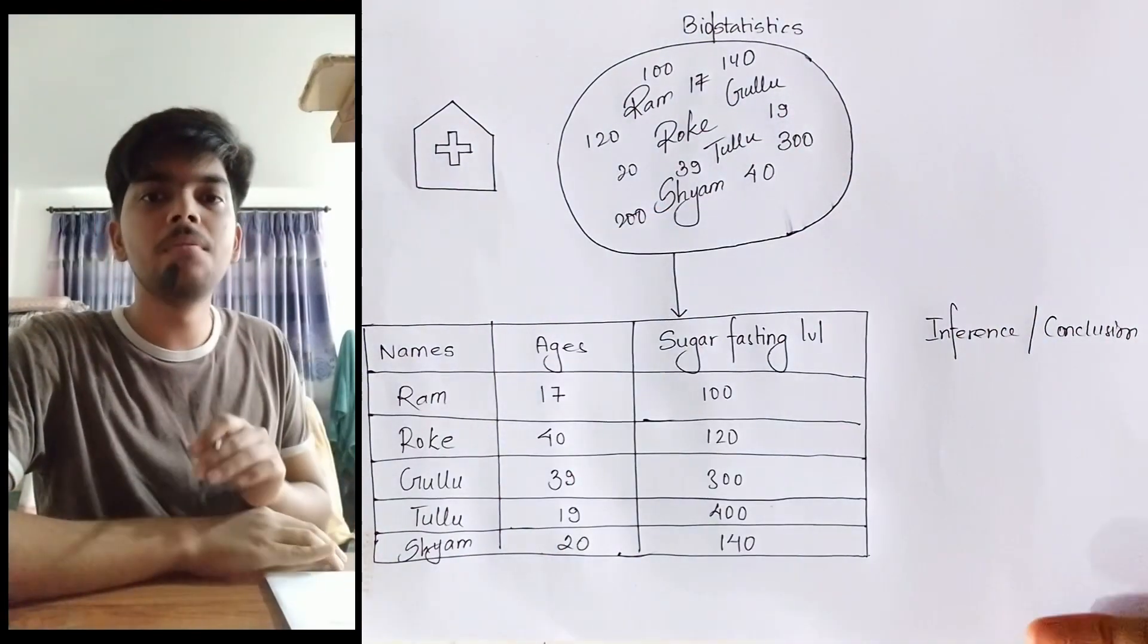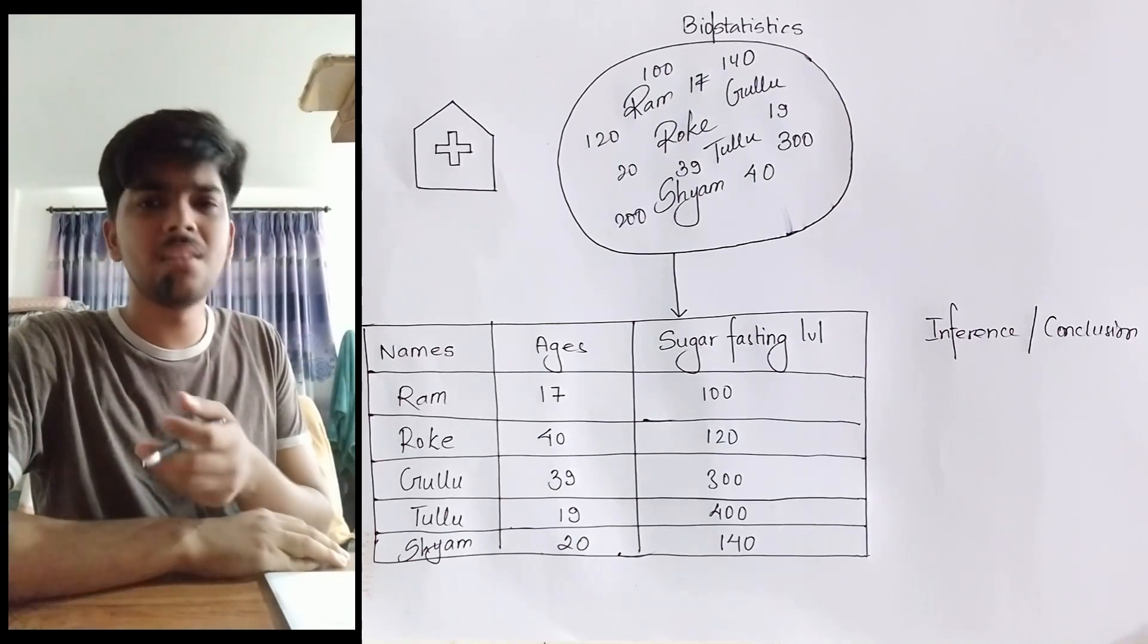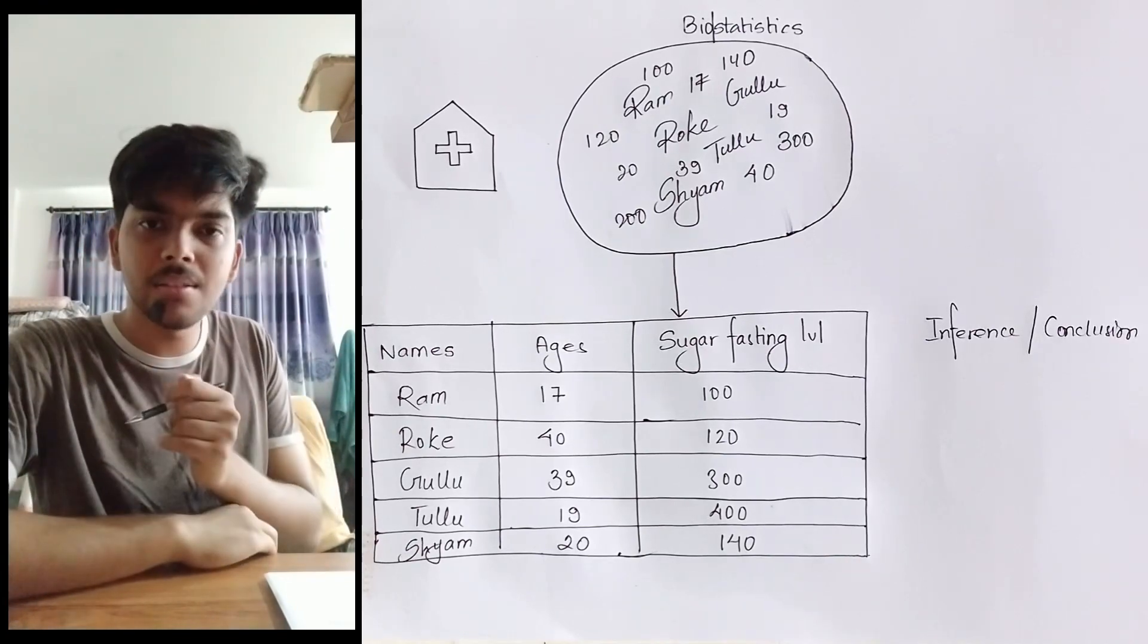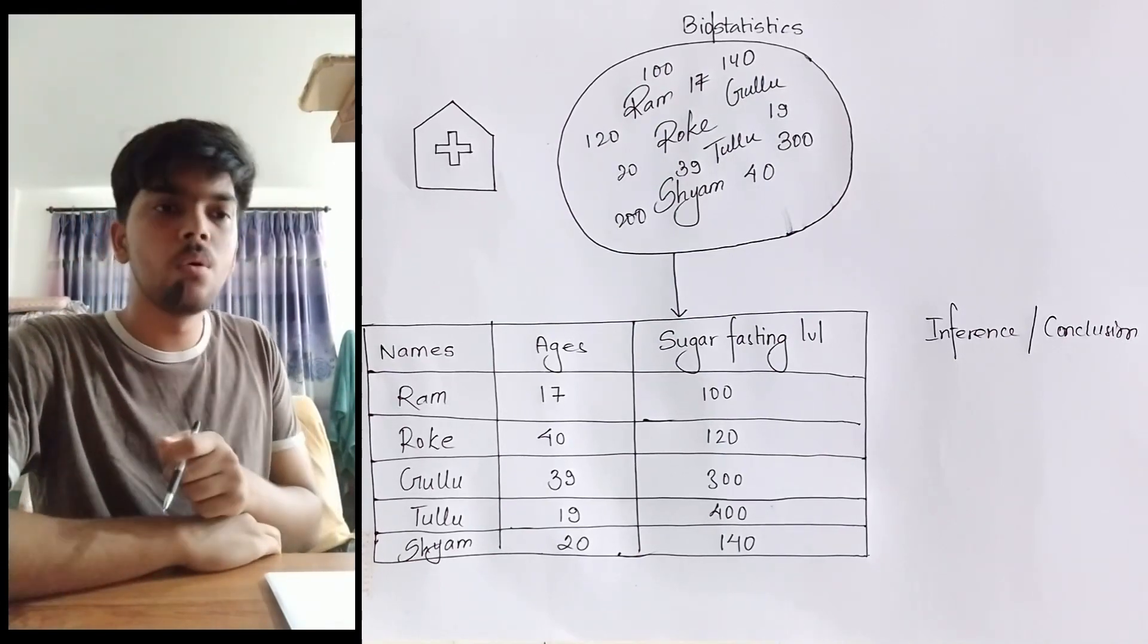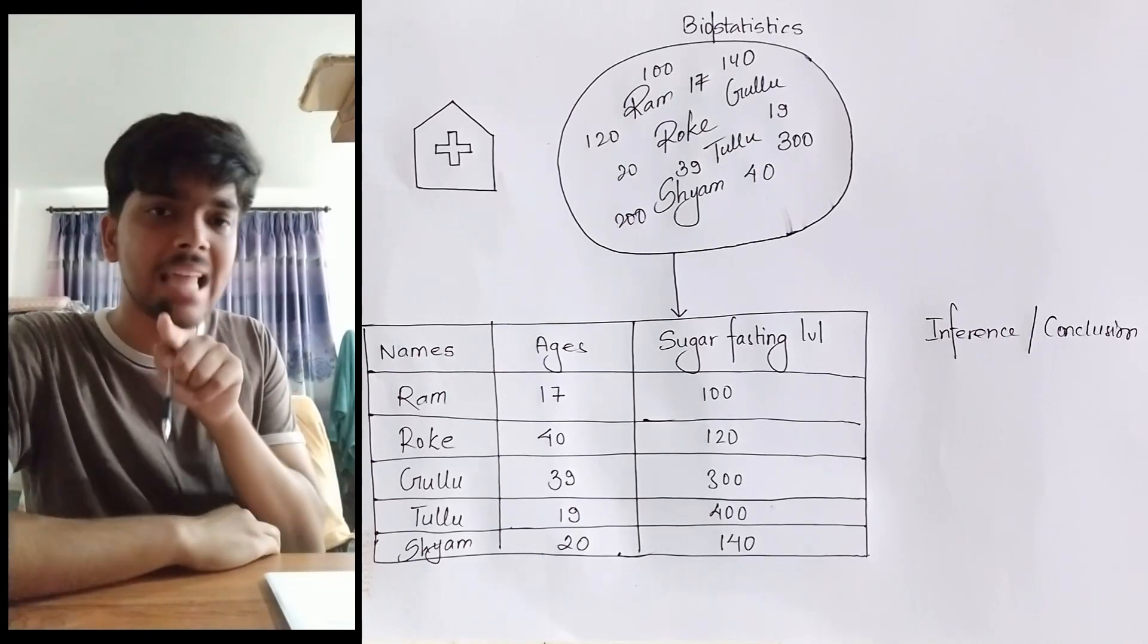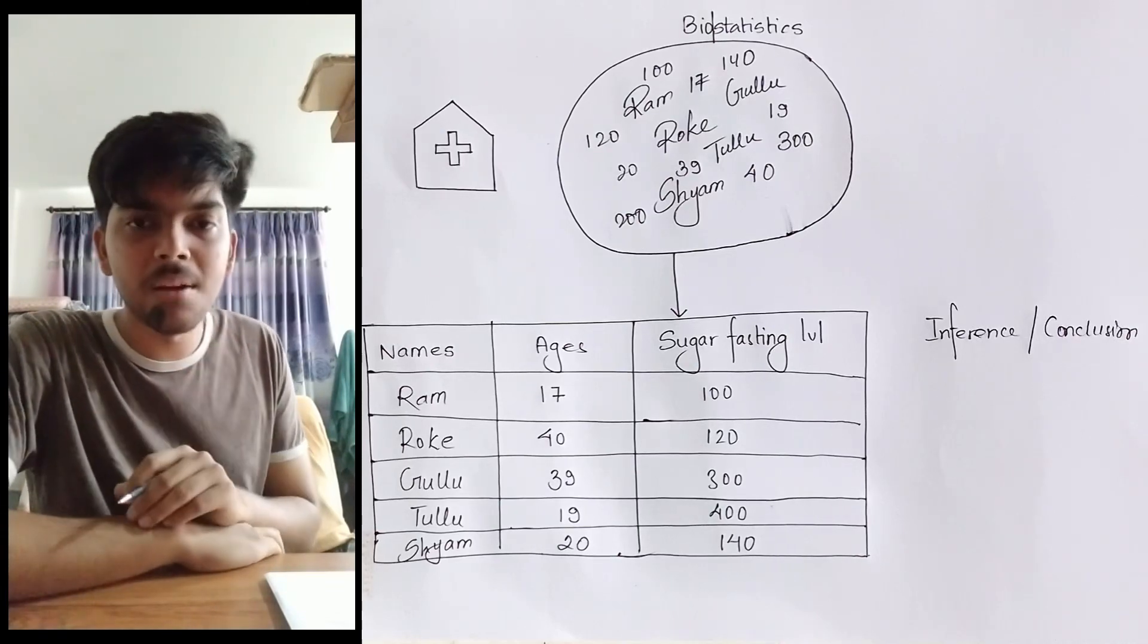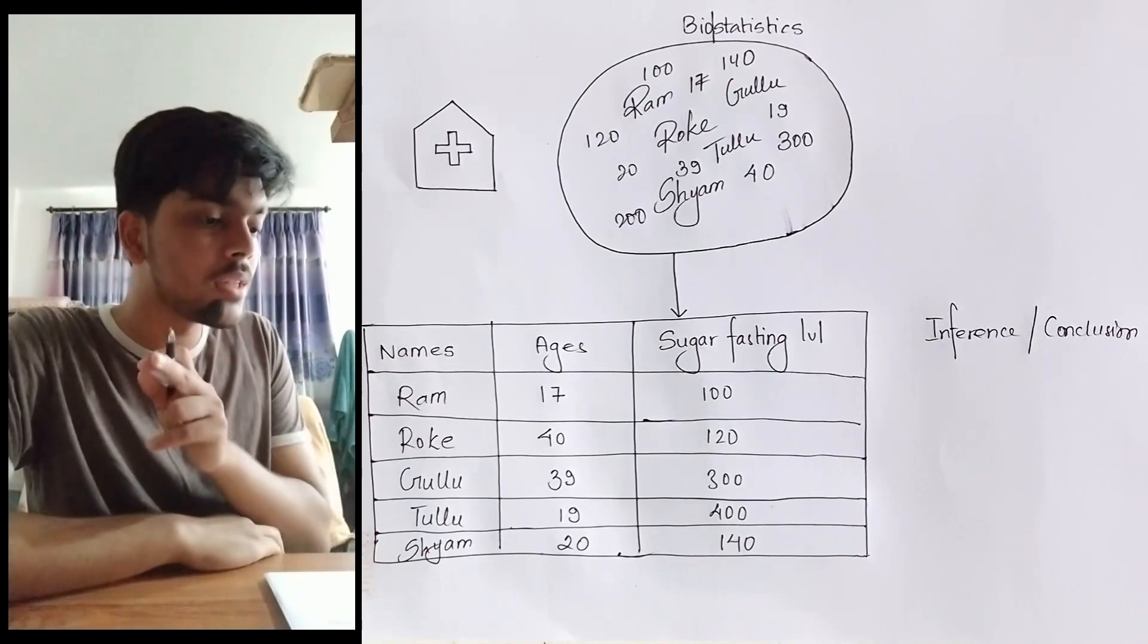These five people have given their blood sample to test for sugar level fasting. What's sugar level fasting? It's your glucose level of blood taken in an empty stomach. After you wake up, before you have your breakfast - before you have broken your fast - you give a blood sample and the glucose level detected in that blood sample is sugar level fasting.